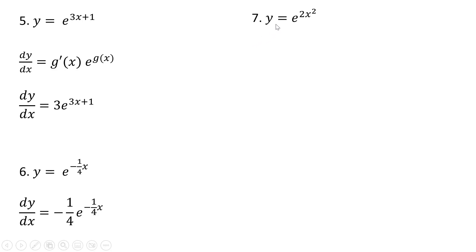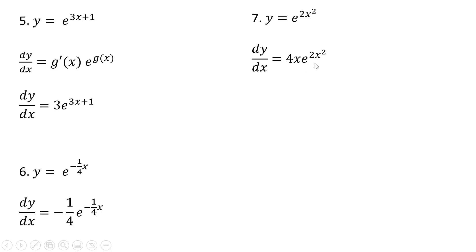Example 7: y equals e raised to the 2x squared power. The derivative of 2x squared is 4x. So the 4x comes down in front, and then multiply it by the original function, and we're done.